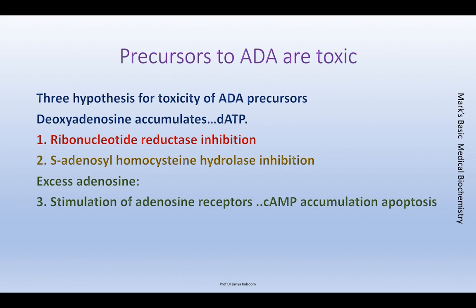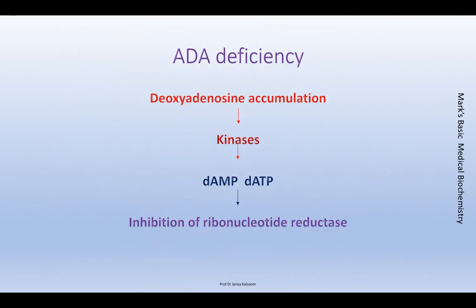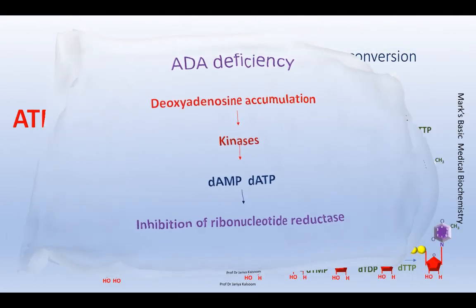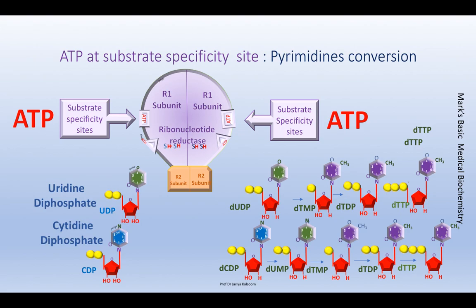dATP accumulation causes inhibition of ribonucleotide reductase and inhibition of S-adenosyl homocysteine hydrolase. Excess adenosine accumulation stimulates adenosine receptors, since it is also a signaling molecule, leading to cyclic AMP accumulation. Ribonucleotide reductase is a dimer consisting of R1 and R2 subunits, also called alpha and beta subunits. On the R1 subunit there are allosteric sites — a substrate specificity site shown in rectangular form, and an activity site shown in triangular form.